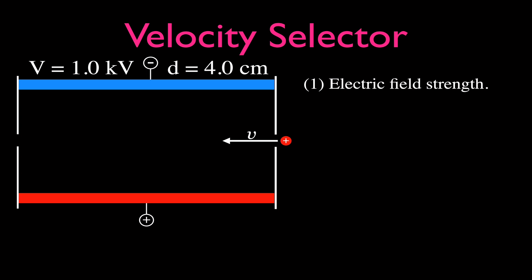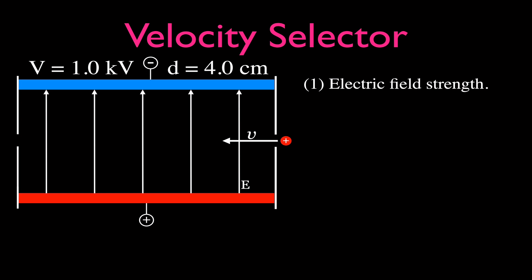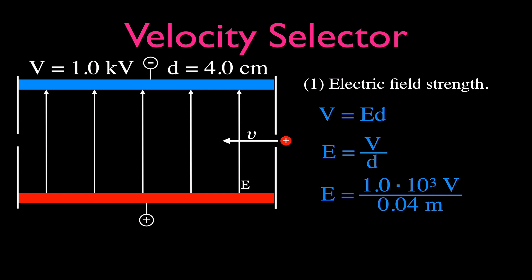The first part of the problem is to calculate the electric field strength. We have positive and negatively charged plates, and the electric field goes from positive to negative. We use the equation V = E × d, and solve for E: the electric field strength equals voltage divided by distance. The voltage is 1.0 times 10 to the third volts, the distance is 0.04 meters (4 centimeters), giving an electric field strength of 25,000 volts per meter, or 2.5 times 10 to the 4 volts per meter.